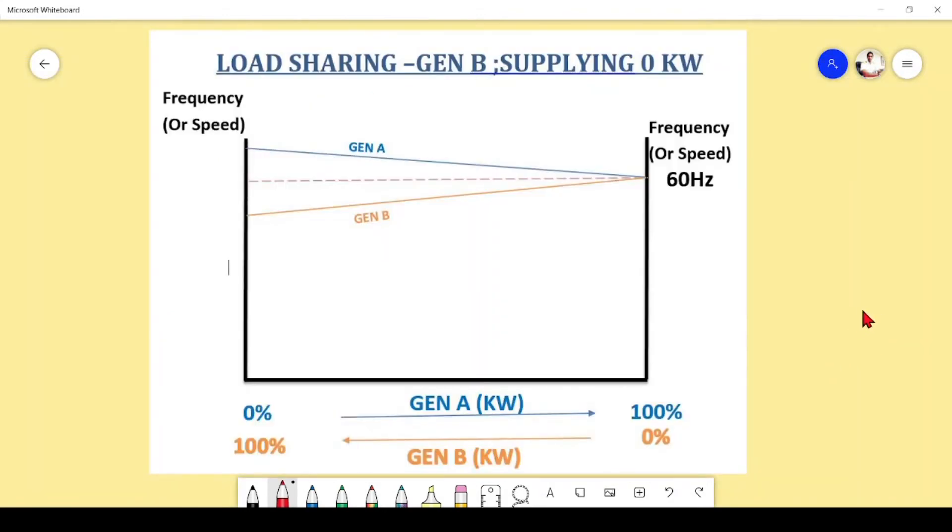So it's clear now how we are going to do the synchronization practically. Now imagine we have already paralleled two generators. That means the incoming generator we have taken into the bus bar, just now connected. There is a graphical representation of these two generators: generator A which was running, and you can see it is running from zero percent to hundred percent load. At that moment, the running generator was taking full load, one hundred percent. Generator B is carrying zero percent load and its load increment is from right to left with hundred percent here. At the moment of connecting the incoming generator to the bus bar, system frequency is 60 hertz, generator A is taking hundred percent load, and generator B is taking zero percent load.